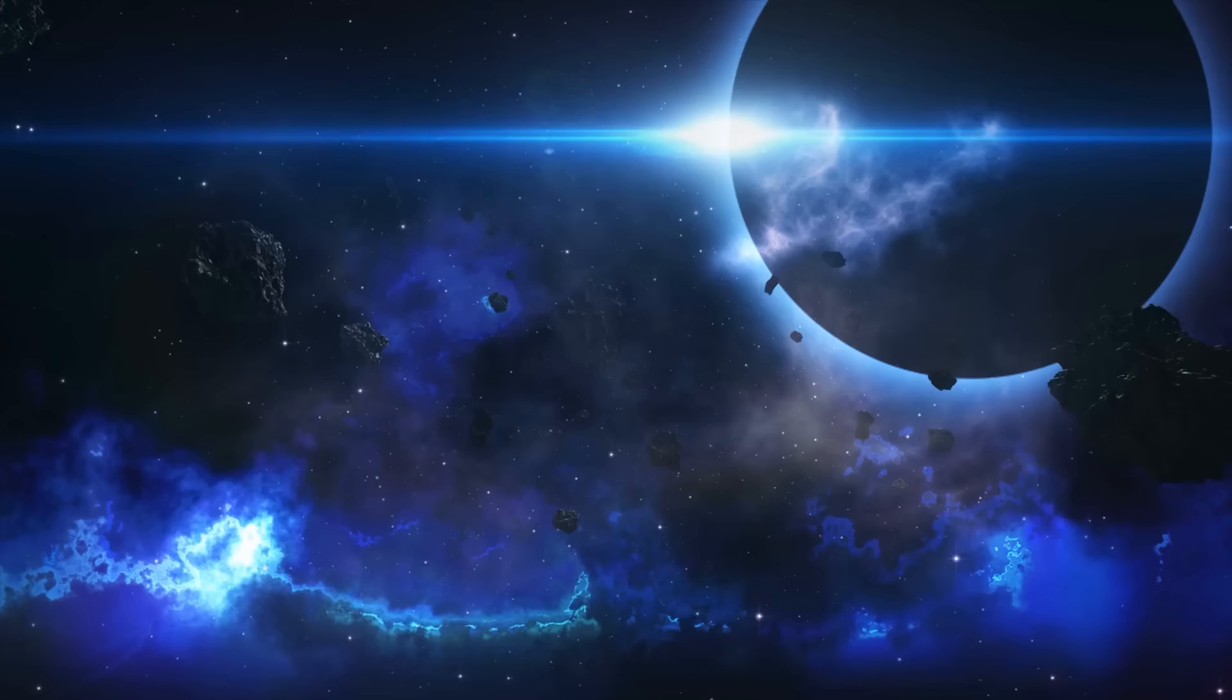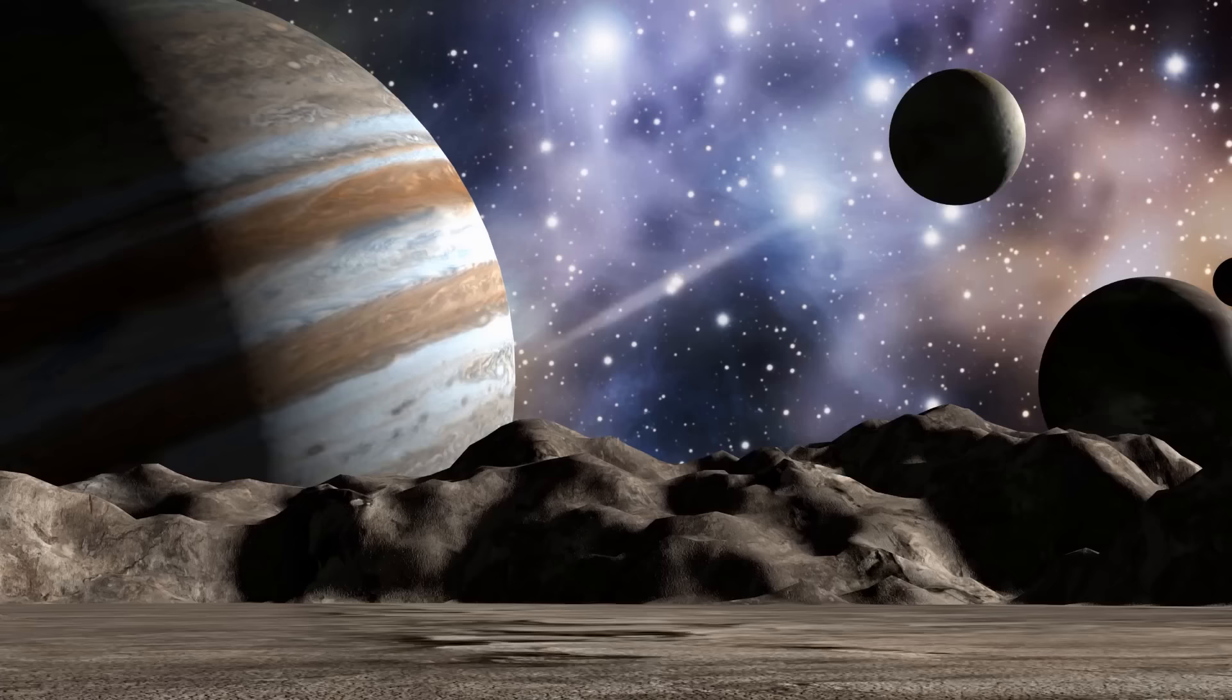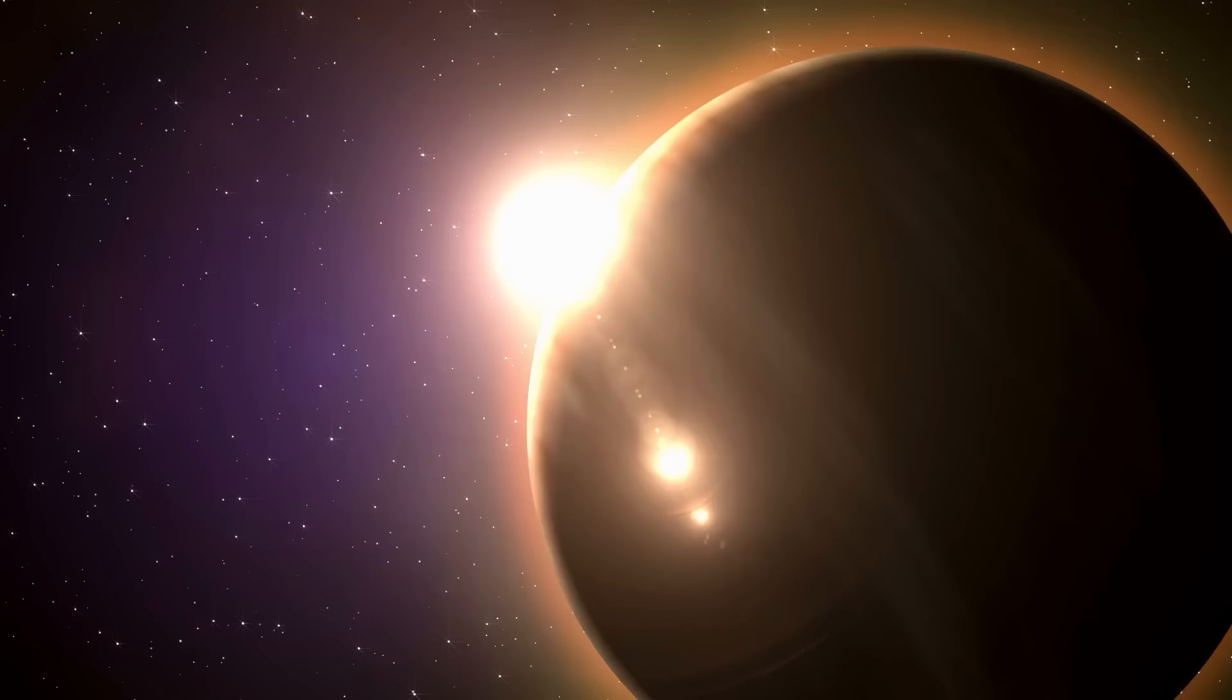To date, the vast majority of exoplanets have been detected by indirect means, which meant that constraints on their habitability had to be inferred based on their parent star, the distance at which they orbited, and their respective masses.